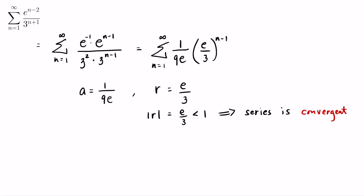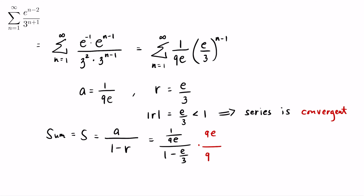So what is the sum of this geometric series? The sum S equals the first term over 1 minus the common ratio, which is (1/9e) over (1 − e/3). We simplify this complex fraction by multiplying numerator and denominator by 9e, giving 1 over (9e minus 3e²). This is the sum of the series: S equals 1 over (9e − 3e²), and since 3e² is less than 9e, the sum is positive.